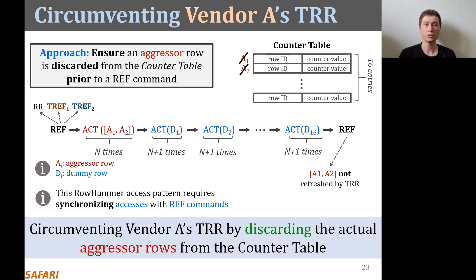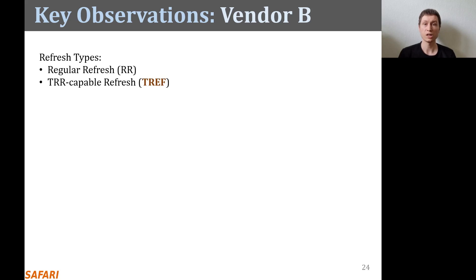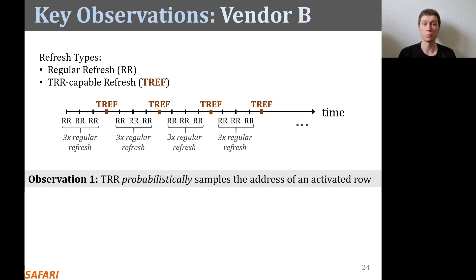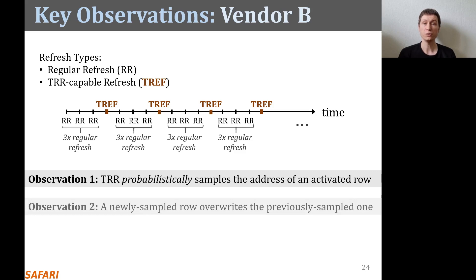Now let's look at vendor B's TRR operation. Differing from vendor A, here we observe a single type of TRR-capable refresh. TRR-capable refresh commands are more frequent than in vendor A — a TRR-capable refresh happens on every fourth refresh command. We make two key observations: first, TRR probabilistically samples the address of an activated row as a potential aggressor address; second, a newly sampled row overrides the previously sampled one, even if the neighbors of the previously sampled row were not yet refreshed. These are the most relevant observations, and we present more in the paper.